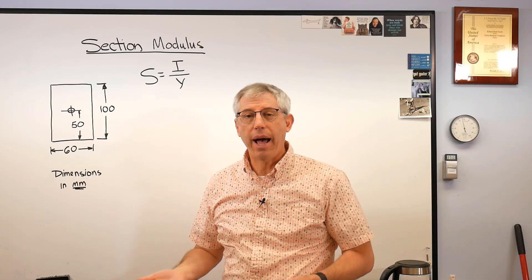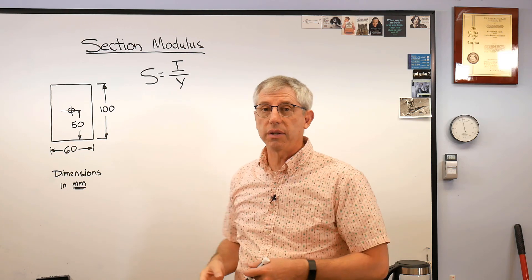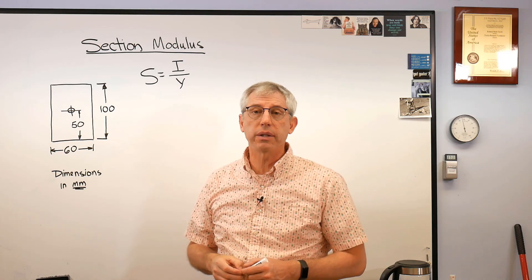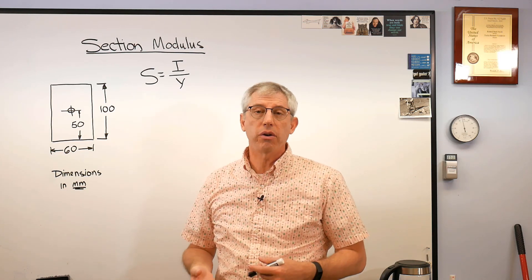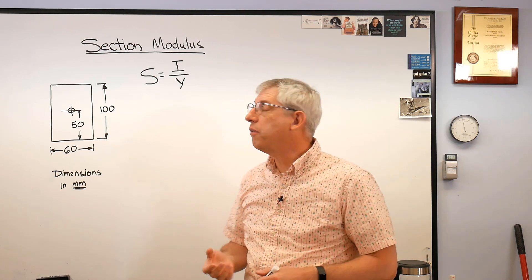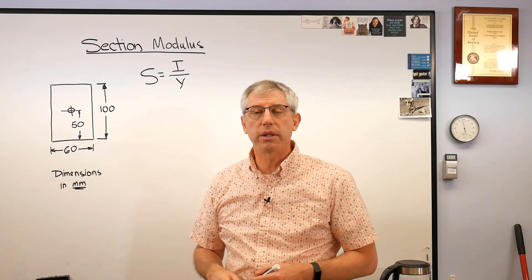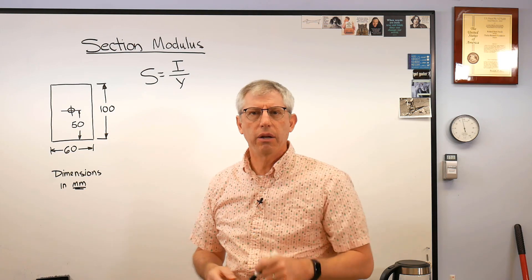Well why would you bother tabulating this? Because this exists in table form in lots of places. If you go buy standard cross-section beams for something, the manufacturer will give you a list of section moduli. Well why do they do that? Here's why.